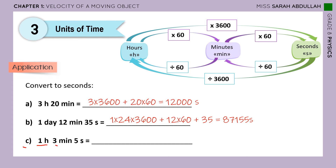The last one: 1 hour, 3 minutes, 5 seconds — try to do it alone, then check your answer. The solution is: 1 times 3,600 plus 3 times 60 plus 5 equals 3,785 seconds.